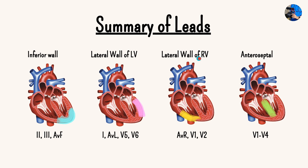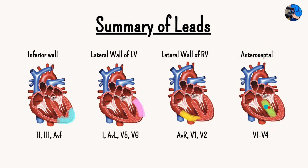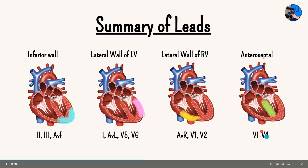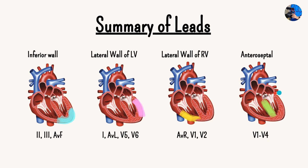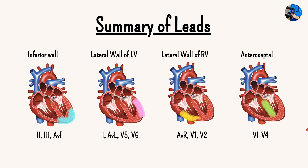We then have the lateral wall of the right ventricle, measured by AVR, V1 and V2 — AVR, with R looking at the wall of the right ventricle. And then we have V1 to V4, which is your anteroseptal region. In 3D, the circuit comes out of the heart measuring at more of a perpendicular angle, so V1 to V4 covers the anteroseptal region before V5 and V6 branch out toward the lateral wall of the left ventricle. I would say you should memorize this slide — it will help you a lot.